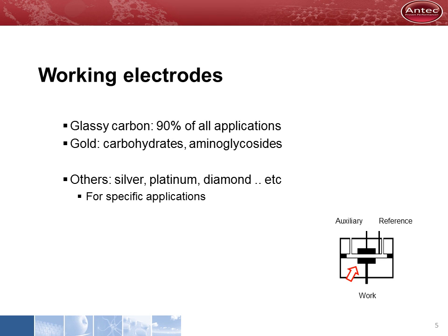There are several different types of working electrodes. The most commonly used electrode material is glassy carbon. It is a highly inert and stable electrode material, compatible with most HPLC solvents and easily polished into a smooth and shiny surface. Other electrode materials are gold, silver, platinum and diamond, which all have specific applications.